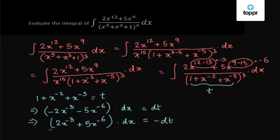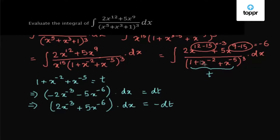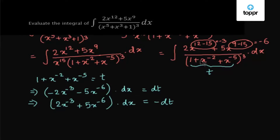Now we can see that the left hand side term is nothing but the term in the numerator. So we can rewrite the integral as the integral of minus dt upon t cube.